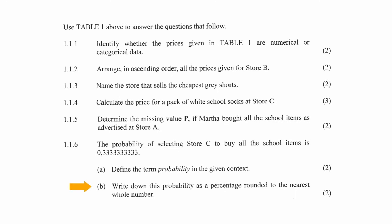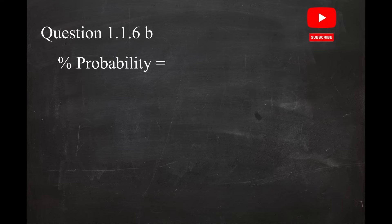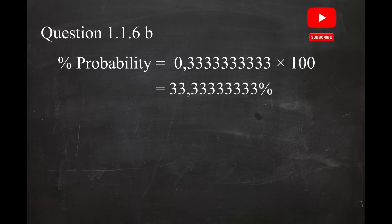In question 1.1.6b, you are instructed to write down this probability as a percentage rounded to the nearest whole number. Since the probability is given as a decimal number, you have to multiply it by 100 to convert it to a percentage. The probability as a percentage equals 0.3 recurring multiplied by 100, which equals 33.3 recurring percent. Rounding this value to the nearest whole number gives you a probability of 33 percent.